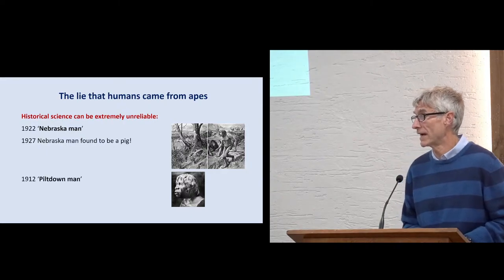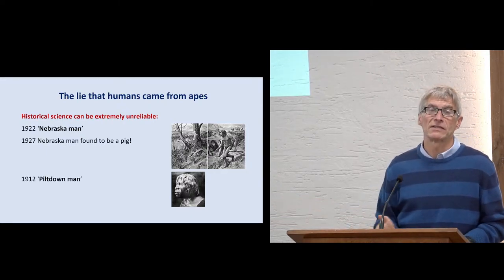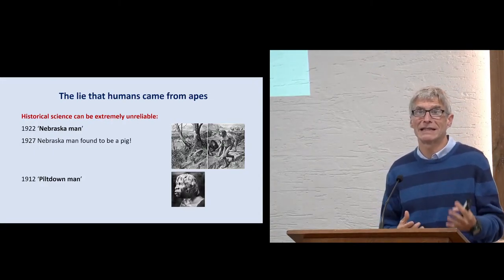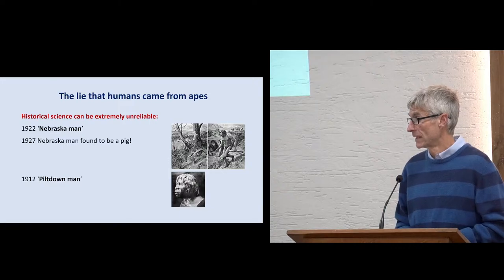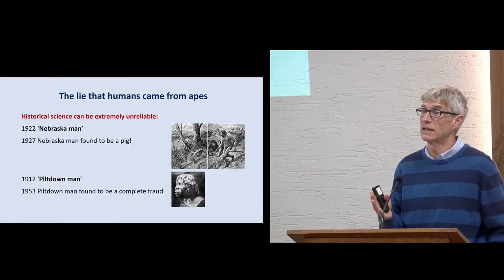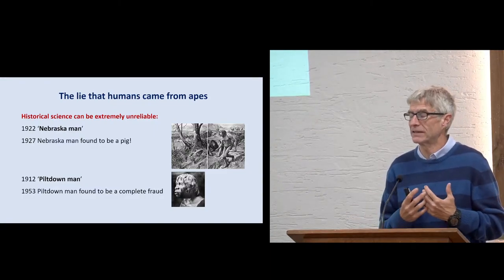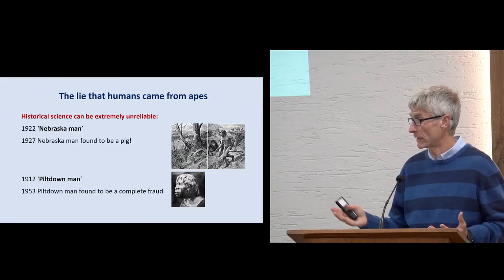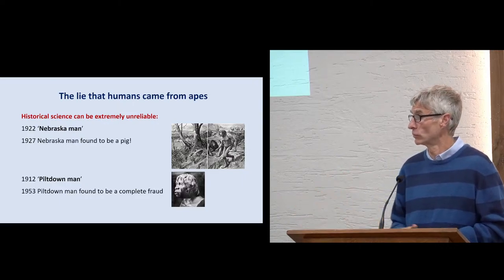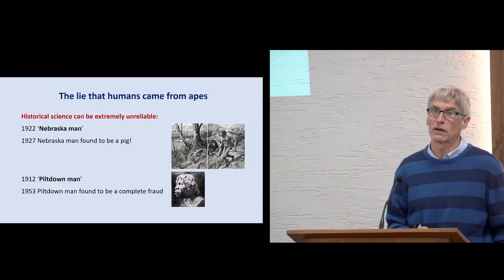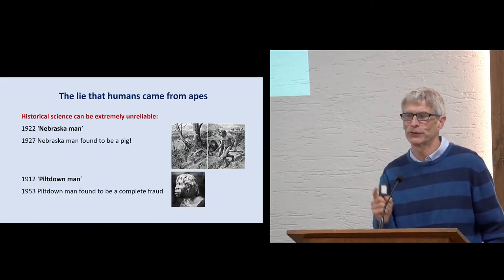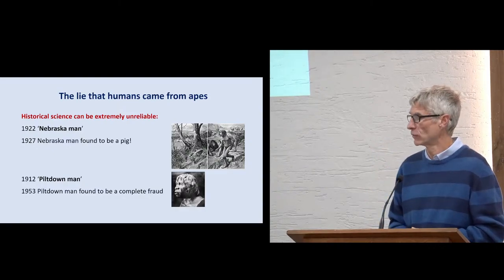Another one is Piltdown Man in 1912. For many years, children were taught Piltdown Man is an example of a missing link between apes and humans. In 1953, it was found to be a complete fraud. They discovered the scientists who made it up. It was based on no evidence whatsoever. And yet, for 41 years, people believed it, and it was taught in schools. And there are lots of other examples you can give. So don't forget, evolution is a historical science, which can be spectacularly wrong.